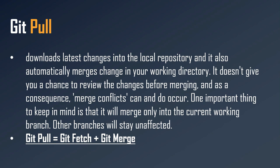One important thing to keep in mind is that git pull will merge only into the current working branch — other branches will stay unaffected. When you use git pull, it brings all the changes from the remote branch directly to your working directory. Internally it does two things: git fetch plus git merge. Because of that, if your working directory and the remote branch both have changes in the same file and the same line, you may get a conflict.